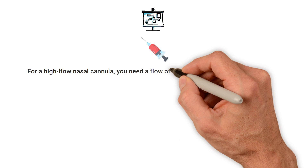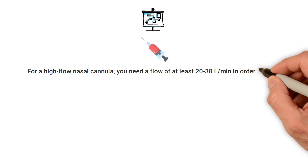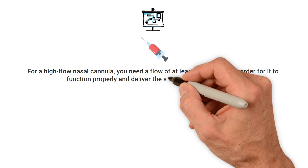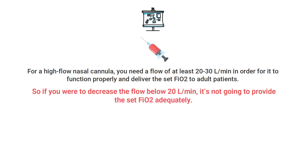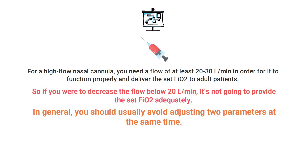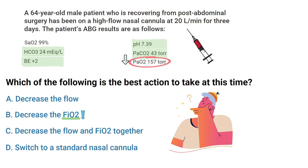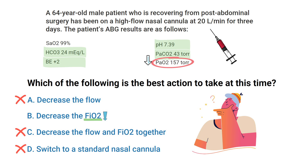In general, for a high flow nasal cannula you need a flow of at least 20 to 30 liters per minute in order for it to function properly and deliver the set FiO2 to adult patients. If you were to decrease the flow below 20 liters per minute, it's not going to provide the set FiO2 adequately. In general, you should usually avoid adjusting two parameters at the same time. So by using our ABG interpretation skills as well as what we know about high flow nasal cannulas, the correct answer is B — decrease the FiO2.